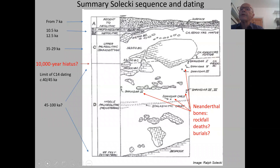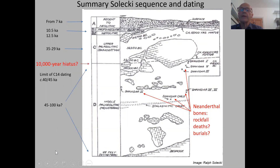This is the summary of the cultural sequence, widely shown: four main cultural layers — A, B, C, and D. D was a Middle Palaeolithic Mousterian. C was an Upper Palaeolithic Aurignacian-like industry he named the Baradostian, from the local Baradost Mountains. He thought there was a 10,000-year hiatus in between. He could only date the upper part, from about 40,000 years using radiocarbon; below that it was effectively undated.